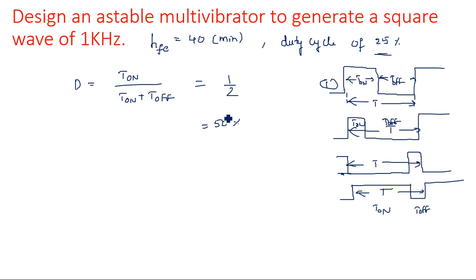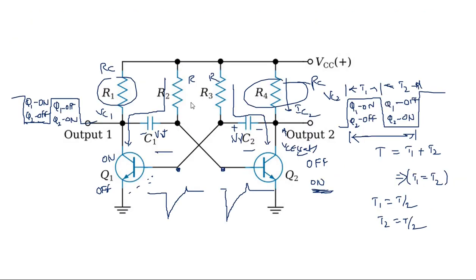A duty cycle of 25% is given and we are asked to design a square waveform generator at 1 kilohertz frequency with a duty cycle of 25%. The astable multivibrator circuit is used — the discussion was already covered in the previous video when we calculated the first astable multivibrator design parameters.